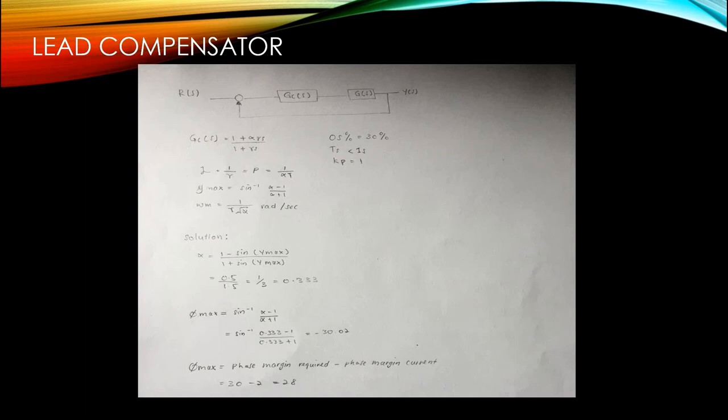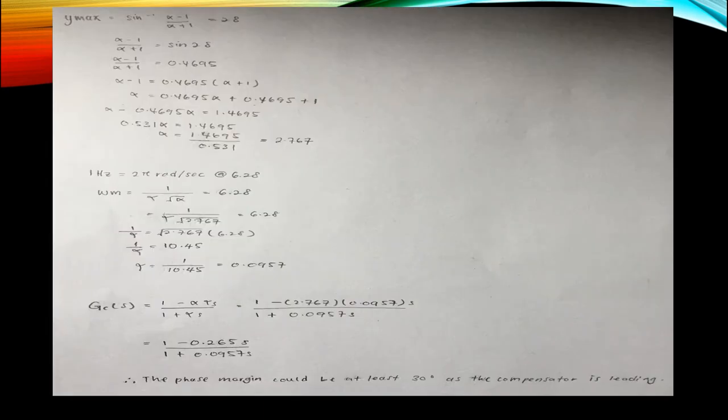Below is the equation for phase max which is 28. Next, omega max equation is shown and the answer is 2.767. The phase margin could be at least 30 degrees as the compensator is leading.